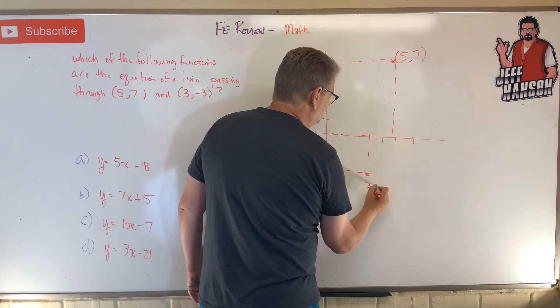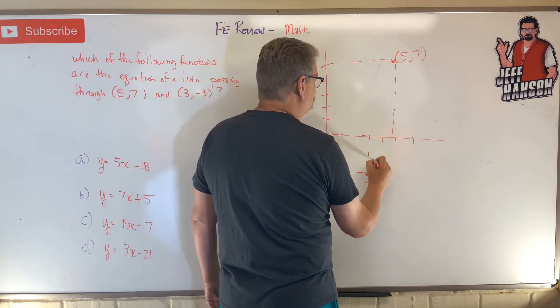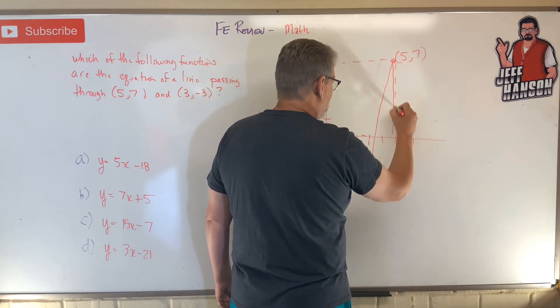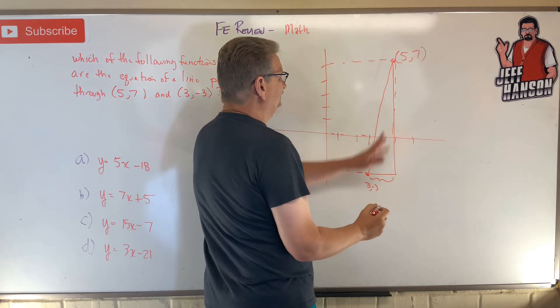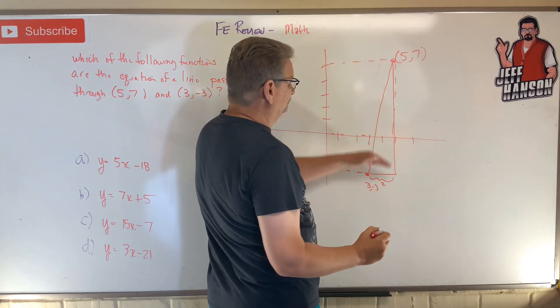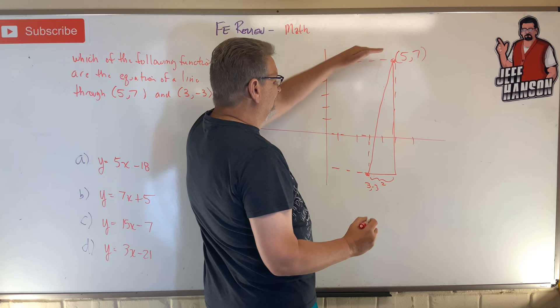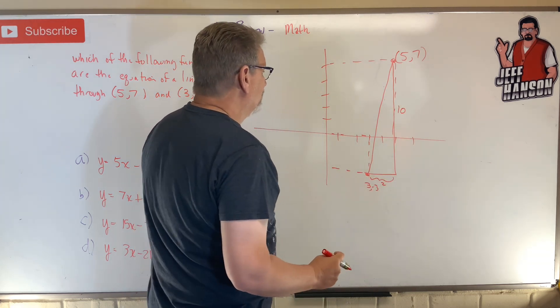Okay, and so what do I know? If I draw me a triangle right here through these points like this, I know that this distance down here goes from 3 to 5, so that's 2. And I know that the height goes from -3 all up to 7, that's 10.